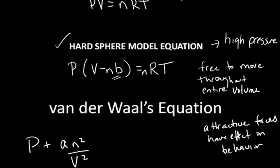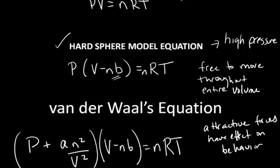A is the experimentally determined constant that is unique for each different type of gas. And then we still have our correction term for the volume, minus NB equals NRT. This is the Van der Waals equation.